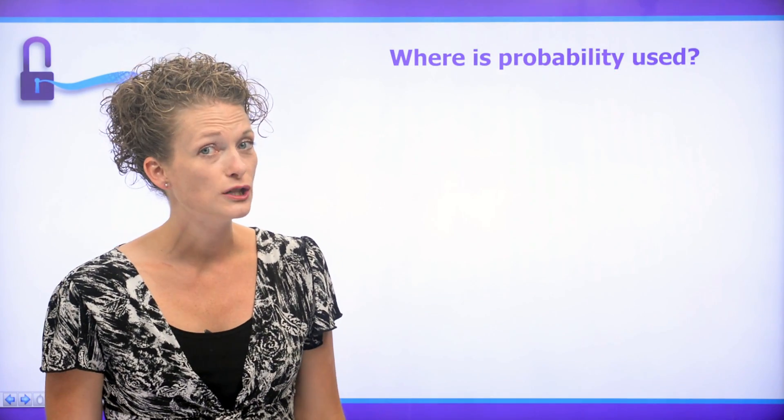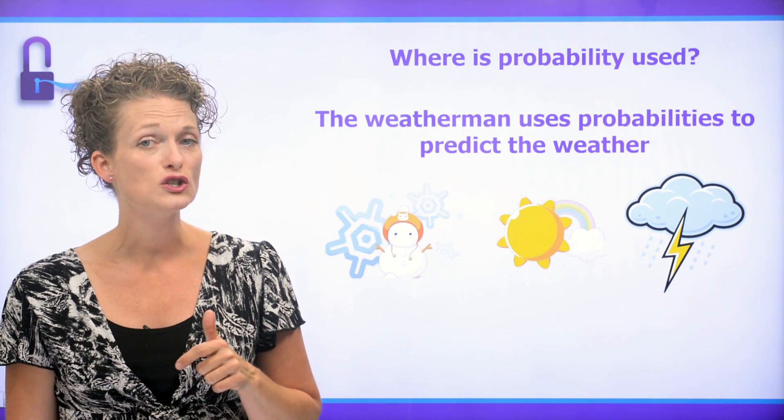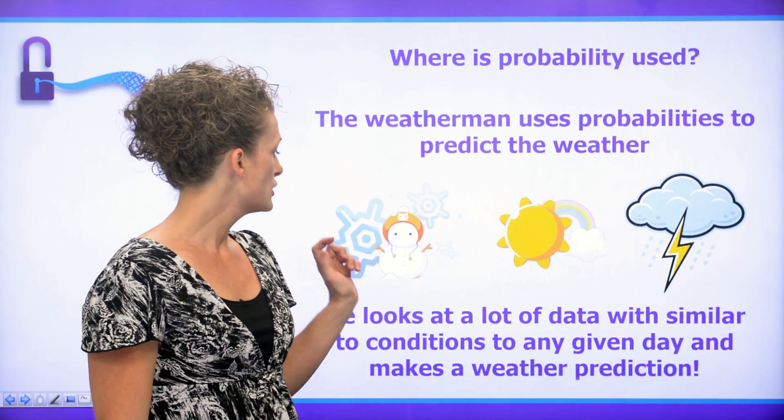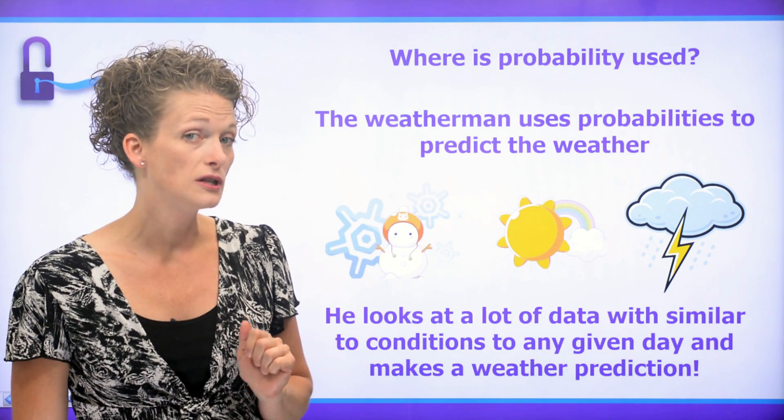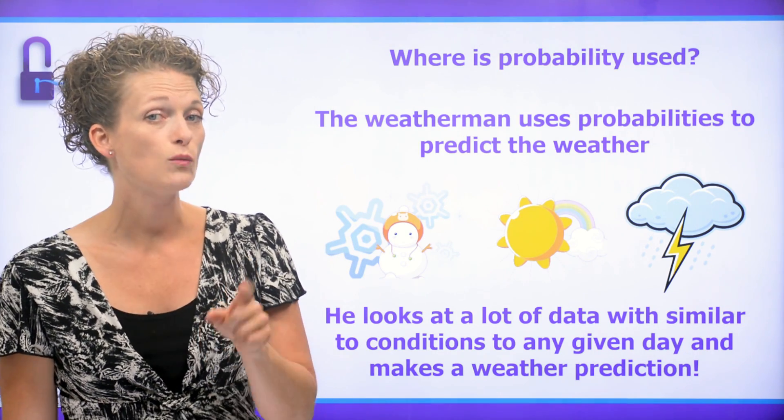So where is probability used? Well, believe it or not, the weatherman actually uses probability to make a prediction. He looks at a lot of data with similar conditions to any given day, and from that, he makes a weather prediction.